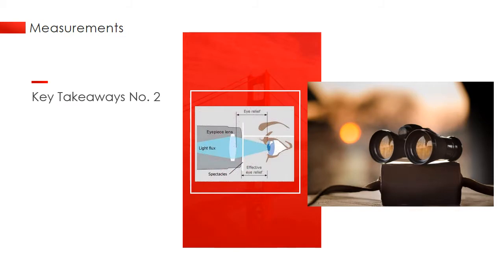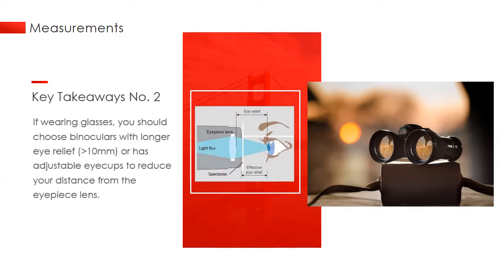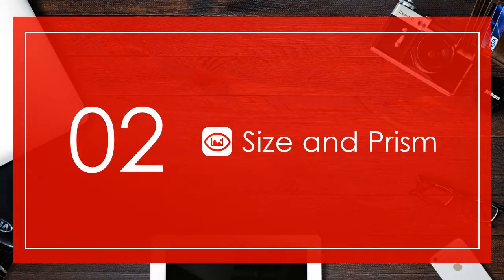The physical appearance and size of a binocular is determined by the type of prism it uses, either poro prism or roof prism.